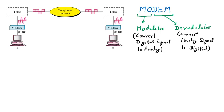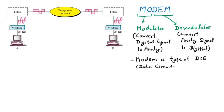In our earlier topic we discussed DTE and DCE cables, where we saw that DCE is the data circuit terminating equipment used for sending and receiving. So we can say that modem is an example of DCE — modem is a type of DCE, which stands for data circuit terminating equipment. That topic was already discussed in the earlier lecture.